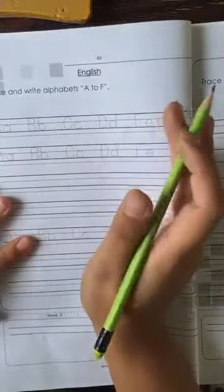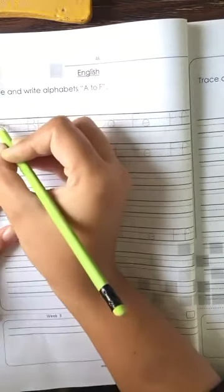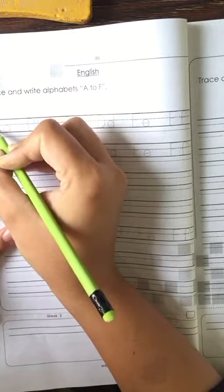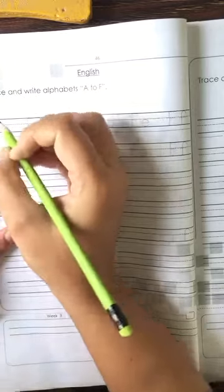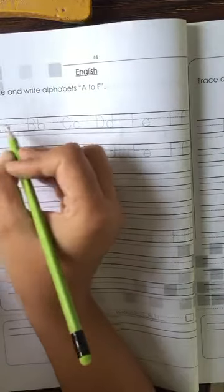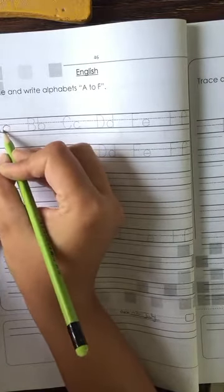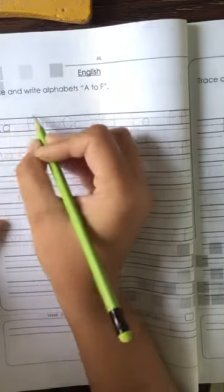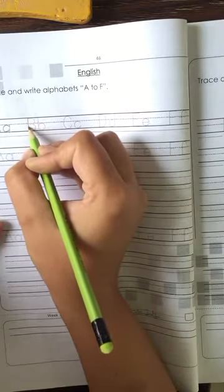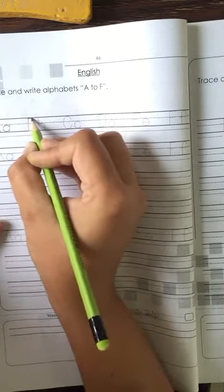A to F you will need to trace and it will be self-writing. First we will trace, top to the bottom. First, for all, we trace the capital A. Now we trace the small a. Next we trace the capital B.